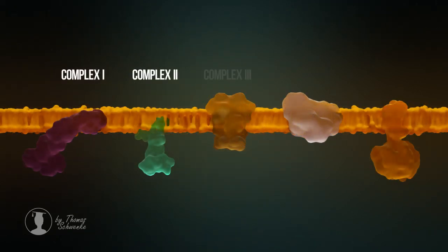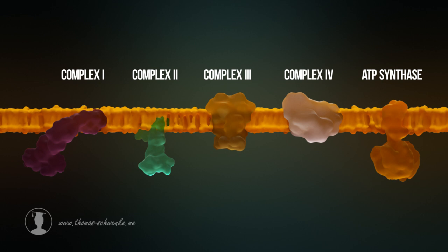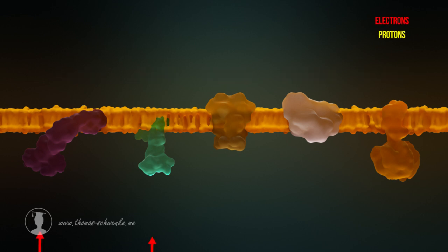Let's take another very simplified look at the entire process. The color red stands for electrons, the color yellow for protons. Due to the flow of electrons, the complexes pump protons into the intermembrane space. The protons flow through the ATP synthase and thus drive the production of ATP from ADP and phosphate. The electrons can flow off at the fourth complex with the help of oxygen, and the cycle begins again.